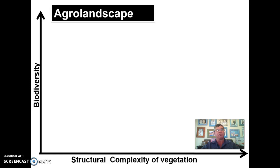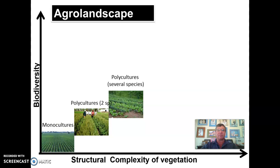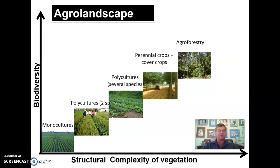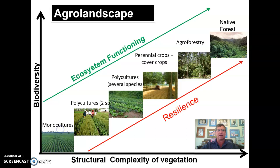When we're looking at an agro landscape, we can see that as soon as you have an increase in biodiversity and the structural complexity of the vegetation increases, as you add more species to the agro ecosystem, you get a situation where ecosystem functioning will also increase accordingly, as well as the resilience of the ecosystem.